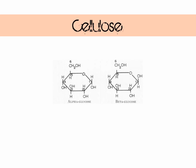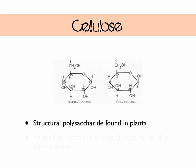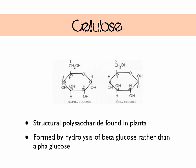Cellulose is completely different from glycogen and starch - it's a structural polysaccharide found in plants. Structural means it's not storing anything; it's purely based on structure, building the physical part of the plant. It's formed by condensation of beta glucose rather than alpha glucose.